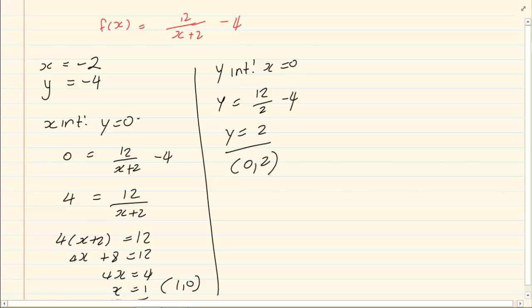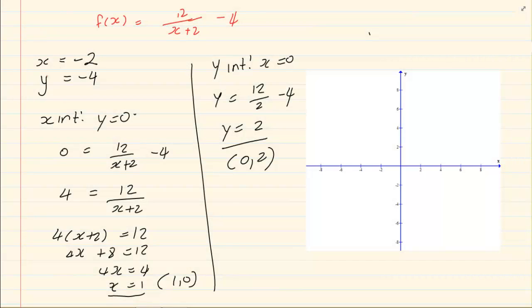Now when we are drawing the graph. So we are first going to draw the asymptote. X is equal to minus 2. And then we have Y is equal to minus 4.